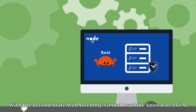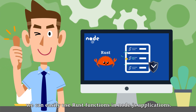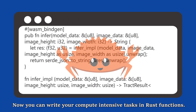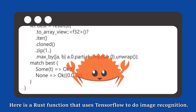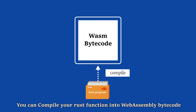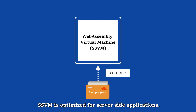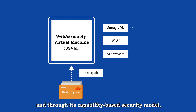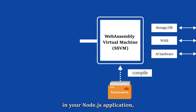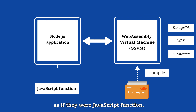With the Second State WebAssembly Virtual Machine, known as SSVM, we can easily use Rust functions in Node.js applications. You can write your compute-intensive tasks in Rust functions — here is a Rust function that uses TensorFlow to do image recognition. You compile your Rust function into WebAssembly bytecode, which runs in SSVM. SSVM is optimized for server-side applications and through its capability-based security model can access system resources safely. In your Node.js application, you can simply call these Rust functions through SSVM as if they were JavaScript functions.